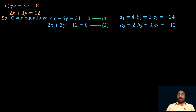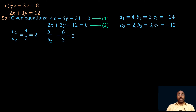Let us check whether they are consistent or inconsistent by comparing the ratio of corresponding coefficients. The ratio a1 by a2 equals 4 by 2, which equals 2. Then b1 by b2 equals 6 by 3, which also equals 2. Taking c1 by c2, we get minus 24 by minus 12, which also equals 2. So all three ratios a1/a2, b1/b2, and c1/c2 are equal.